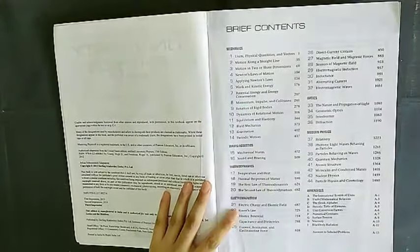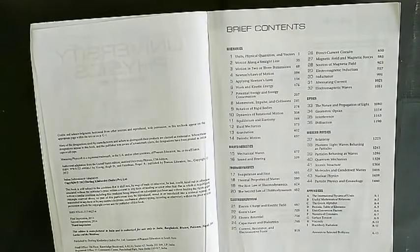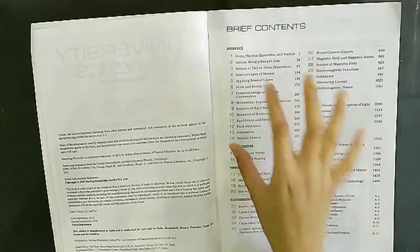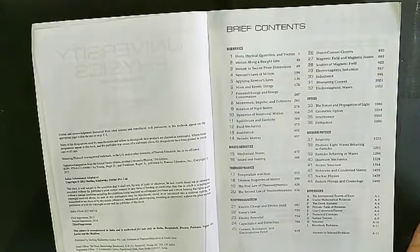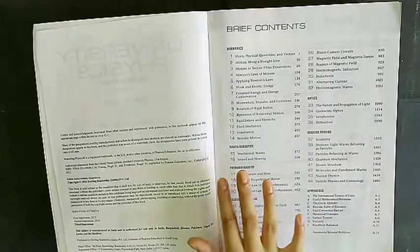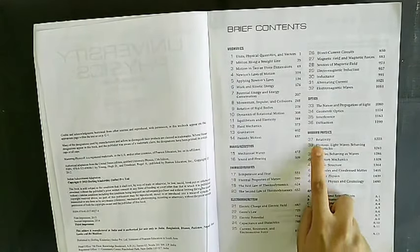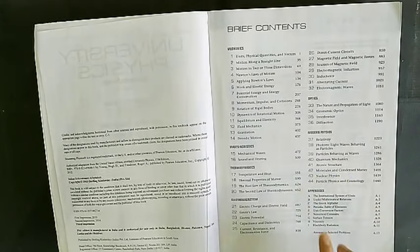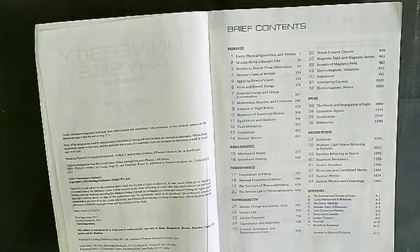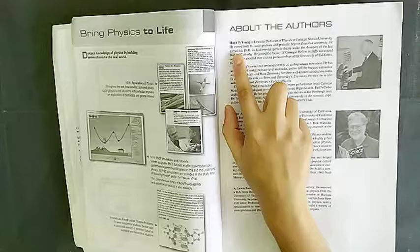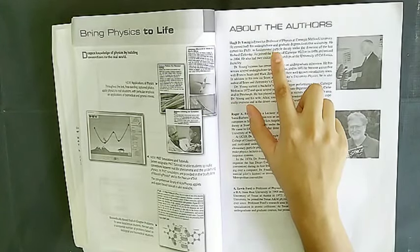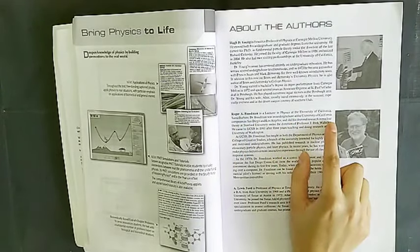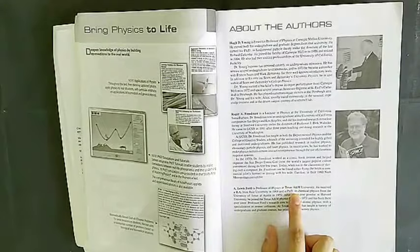As we see, it covers a vast number of topics like mechanics, waves, acoustics, thermodynamics, electromagnetism, optics, modern physics, which are the main chapters and sections this book is divided into. It has further chapters in there and these are very key, especially if you see in the modern physics bit. Relativity, quantum mechanics, atomic structure, and nuclear physics are each whole subjects of their own. Young is Emeritus Professor of Physics at Carnegie Mellon University. Roger Friedman is a lecturer in Physics at the University of California. Lewis Ford is a Professor of Physics at Texas A&M University.